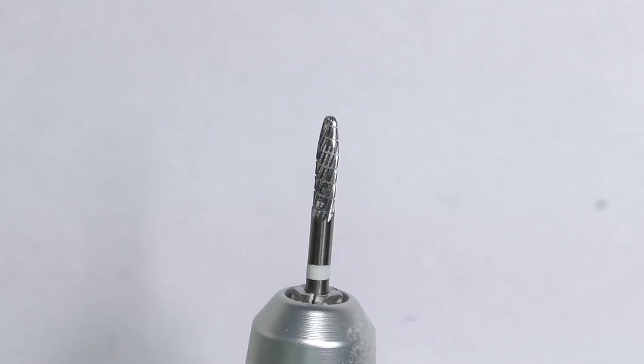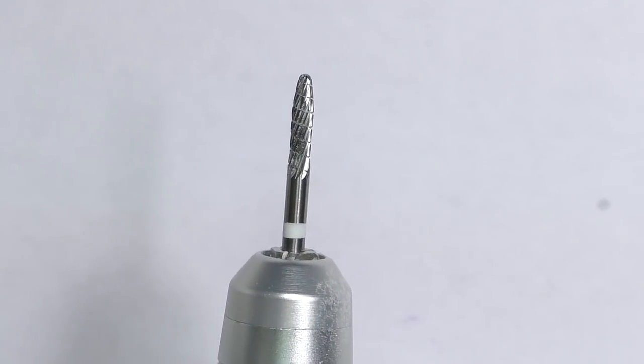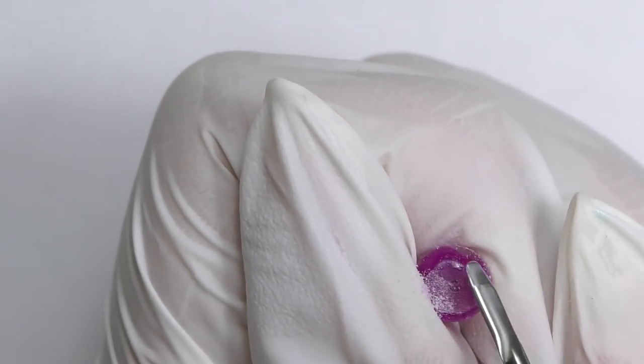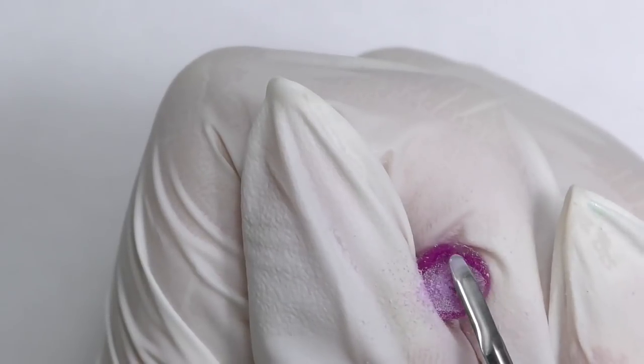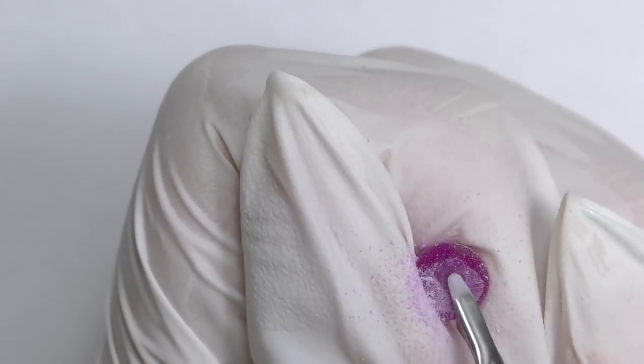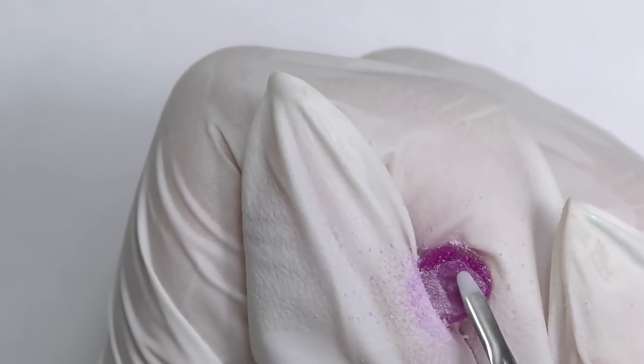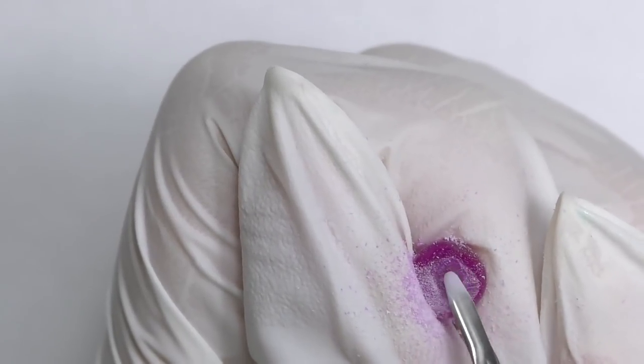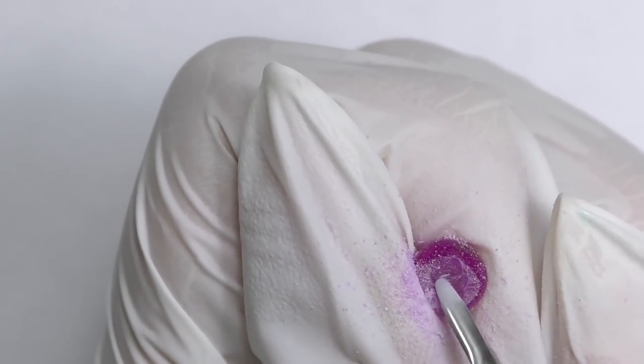And now let's set it into the nail. So first I will file one side with 100 grit file. If you don't have electric file, then you simply need to hold it tight and file one side until it's flat, or you can use a carbide bead and do the same with electric file. You need to carefully hold it. We need to file it until one side is completely flat, so it will be much easier to secure it on the nail, and also it will last longer.